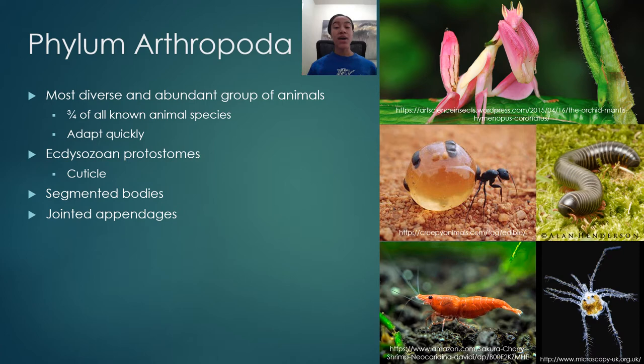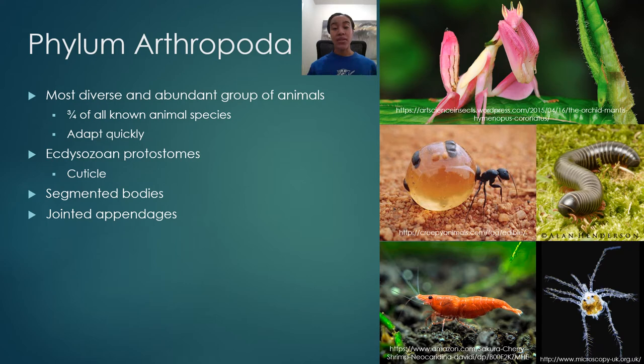Phylum Arthropoda is the largest and most diverse phylum of animals on Earth. Three-fourths of all known animal species belong to this phylum - that's a lot of diversity. Their ability to be so diverse and abundant is largely attributed to their ability to adapt very quickly. Combining rapid adaptation with a relatively fast reproduction rate explains how they've spread all over the planet and occupied almost every niche on Earth.